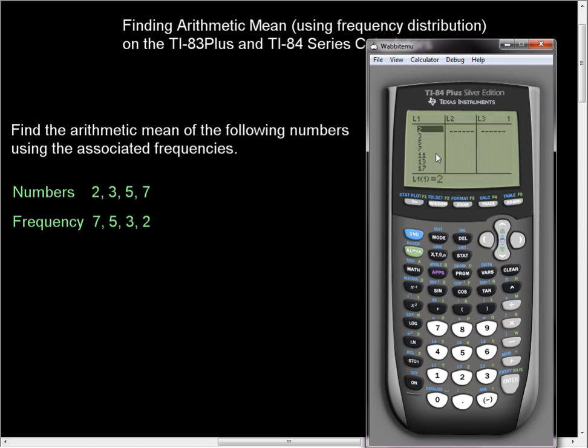And now you can see that I already have things in my list. Well, I don't want them there. So I'm going to go ahead and scroll up so that I'm selecting the header L1. Press the clear button, hit enter. That will clear out all of L1. If you press the delete key, you'll delete the list. Don't do that, not unless you really, really want to.